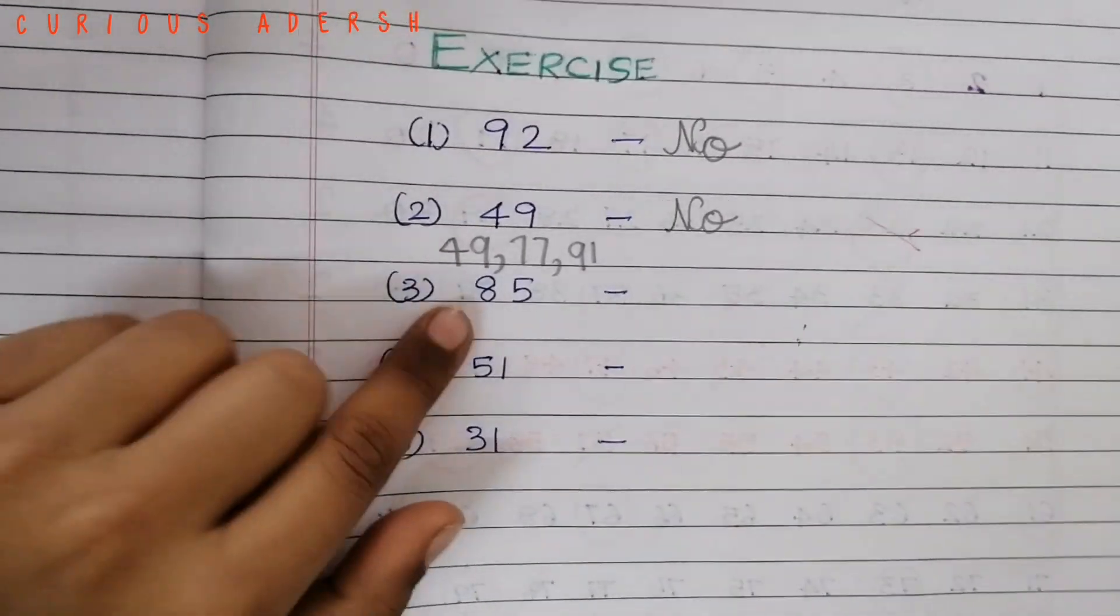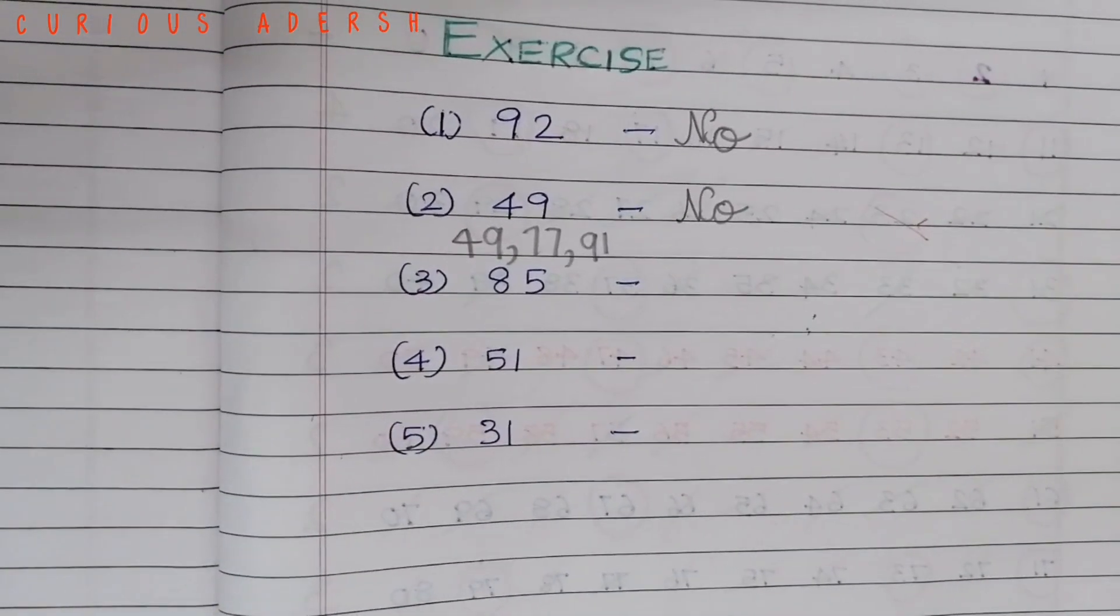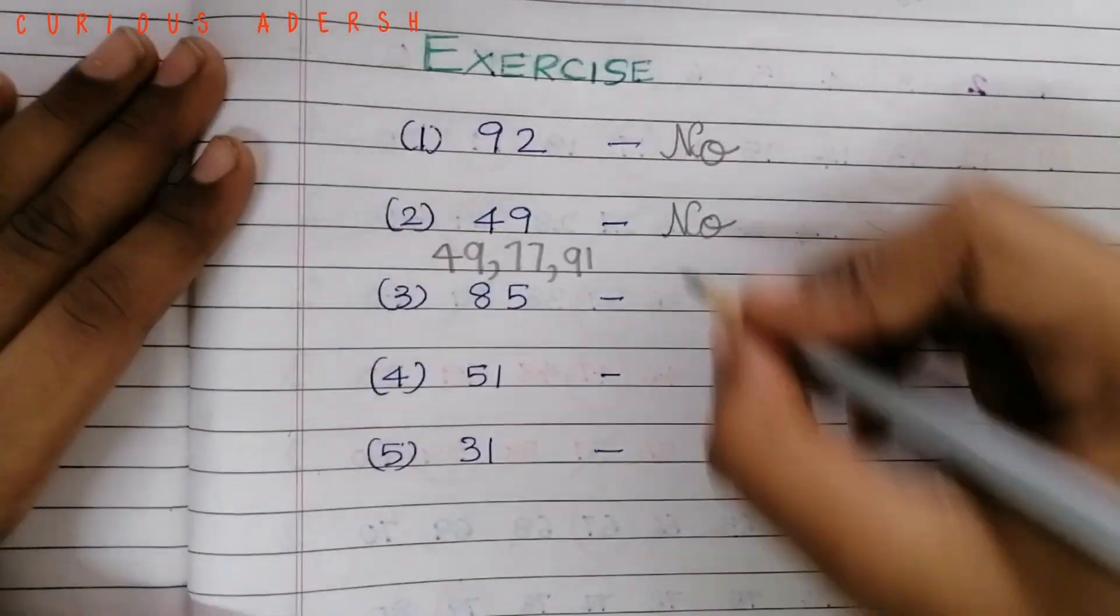Let's move to the next question. 85. 85 is not a prime number because it ends with 5. No.